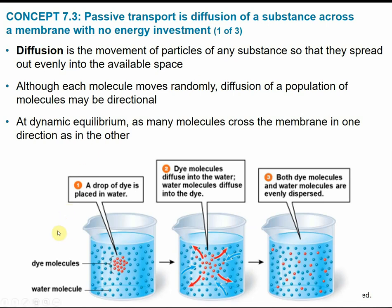One classic example: you have a beaker of water and add a drop of dye. When you first place the drop, you have a concentrated spot of dye in the middle of the beaker. But as time goes by, those dye molecules start to diffuse and spread outward throughout the beaker. After a certain period of time, the dye is evenly dispersed and you have a uniform color throughout the water — it has been completely dissolved and evenly dispersed.